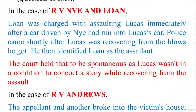Let us look at other cases that seem to have applied the sufficient rather than the strict contemporaneous rule. We look at the case of R versus Nile and Loan. Loan was charged with assaulting Lucas immediately after a car driven by Nile had run into Lucas's car. Police came shortly after, and Lucas, while recovering from the blows, identified Loan as the assailant.